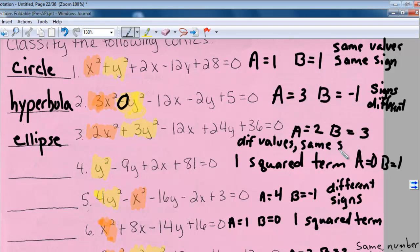And last, number four, example number four, I only have one square term. A is 0, b is 1, so therefore I have a parabola.